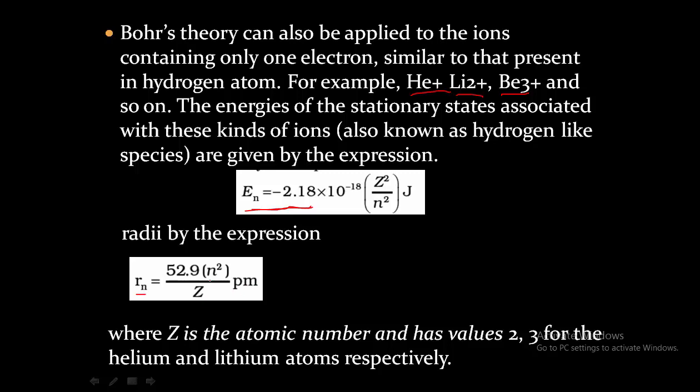The radii of the shells can be calculated using the equation: Rn = 52.9 × n²/Z picometers. Here Z is the atomic number, and has values 2 and 3 for helium and lithium atoms respectively. Z represents the atomic number of elements other than hydrogen. Remember these expressions — they are helpful for solving problems.